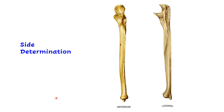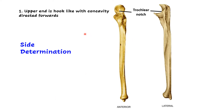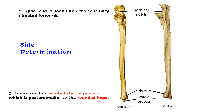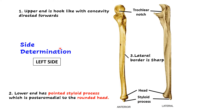How to determine the side of the ulna? For this you have to keep three points in mind. First, the upper end is hook-like with the concavity directed anteriorly or forwards — this concave surface is known as the trochlear notch. Second, at the lower end there is a round head and a pointed bony process known as the styloid process, which is posteromedial to the rounded head. Third, the sharpest border of the ulna is the lateral border or the interosseous border. Keeping these three points in mind, this ulna belongs to the left side.